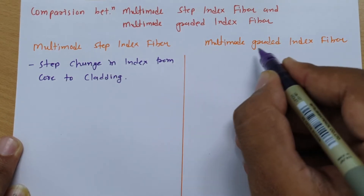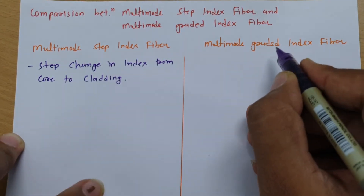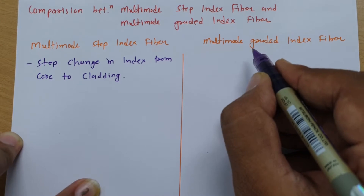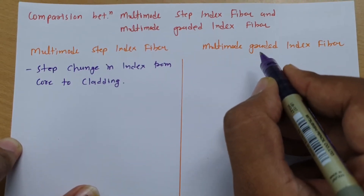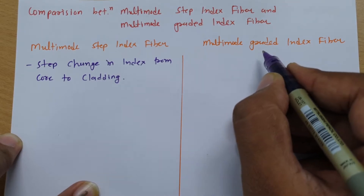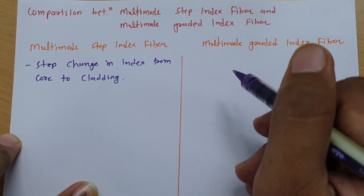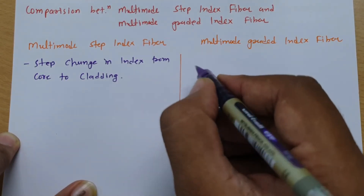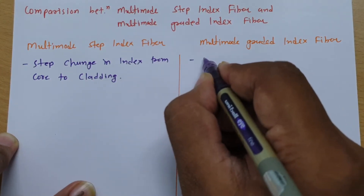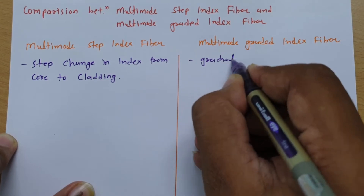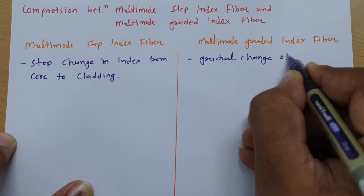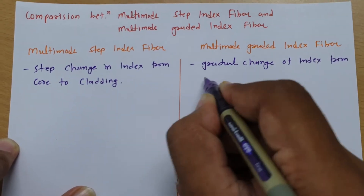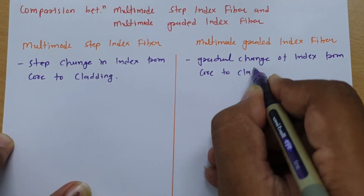While in Multi-mode Graded Index Fibre, as we have seen for Graded Index Fibre, based on the profile, the index will change but it will change gradually — it will not change as a step. That change may be triangular or it may be parabolic. So that is how the index will change: a gradual change of index from Core to Cladding.